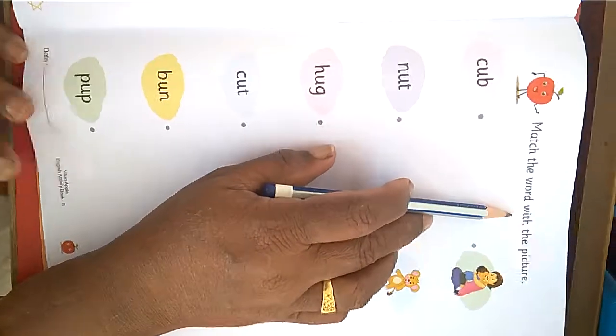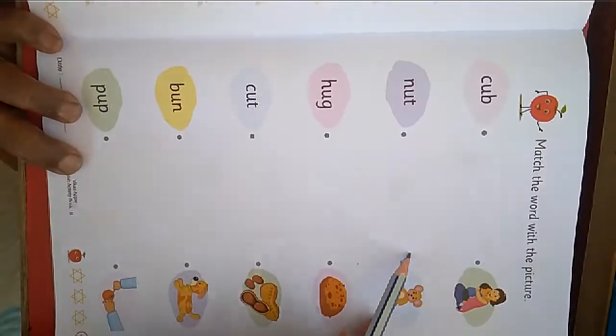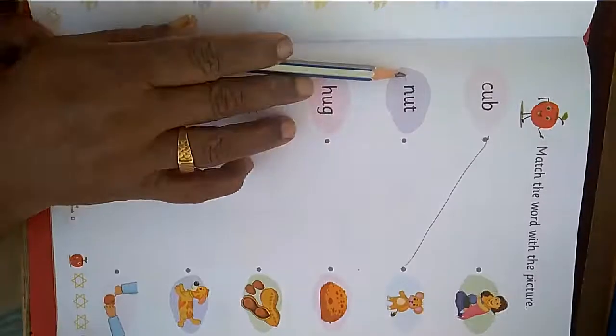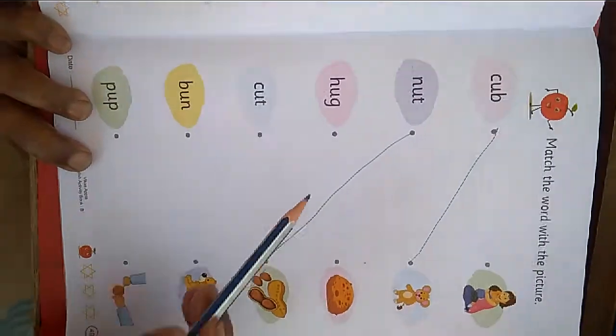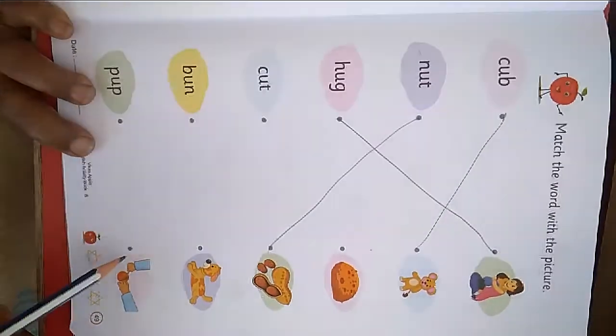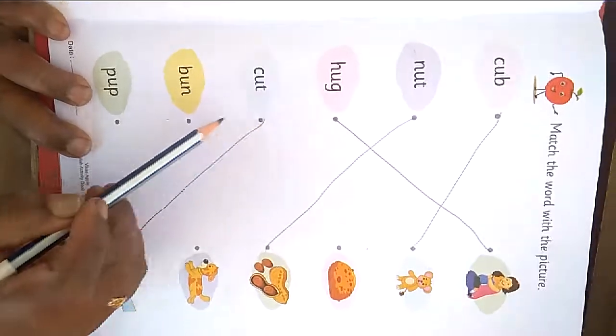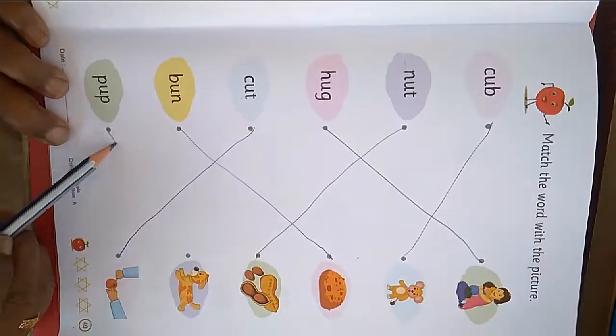Match the way with the picture. C U B cup. C U B cup. Cup kithere? N U T nut. H U G hug. C U T cut. B U N ban. B U P pup. B U P pup.